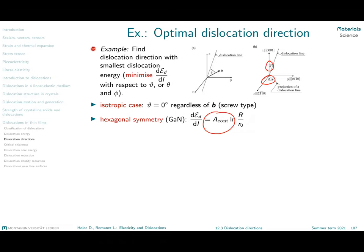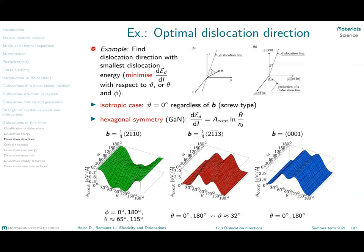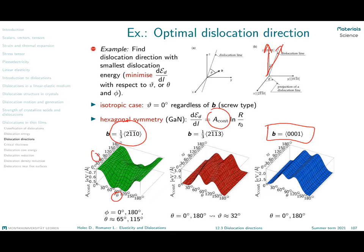For gallium nitride, it becomes clear why I was talking before about A, C, and A plus C type dislocations. If we take the C type dislocation — Burgers vector along the C axis — and choose different directions of the dislocation line, the first observation is that it does not depend on the angle phi. It does not depend on where the dislocation line is oriented. All it depends on is the angle theta, meaning the inclination away from the 0001 axis.